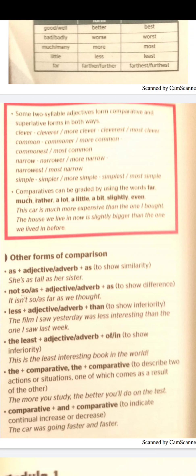The double comparative — 'the + comparative, the + comparative' — is used to describe two actions or situations where one comes as a result of the other. For example: 'The more you study, the better you will do on the test' or 'The less you eat, the more weight you will lose.' We also use 'comparative and comparative' to indicate continual increase or decrease — for example: 'The car was going faster and faster.'